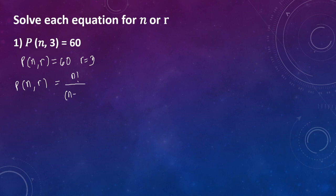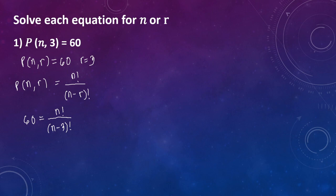So isubstitute natin yung ating mga given value dito sa ating formula. So yung P of n taken r at a time is equal to 60, equals yung ating n — yan yung nawawala — n factorial over quantity of n minus 3, quantity of n minus 3 factorial.